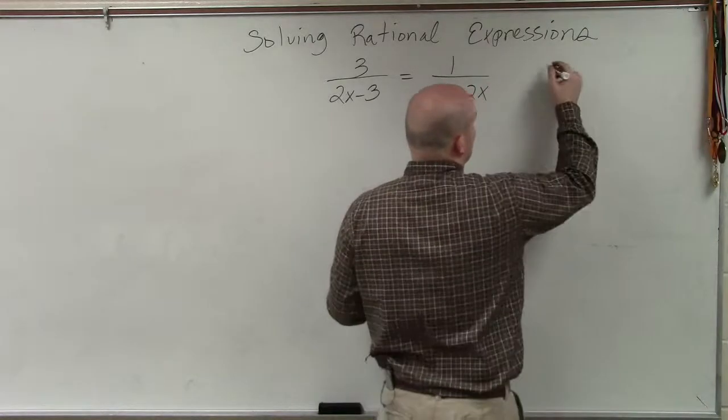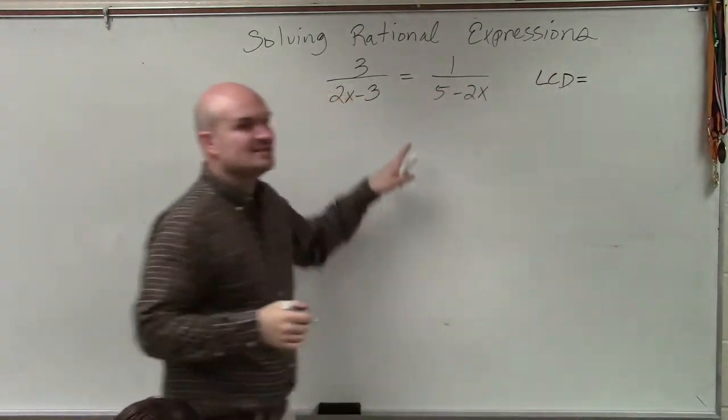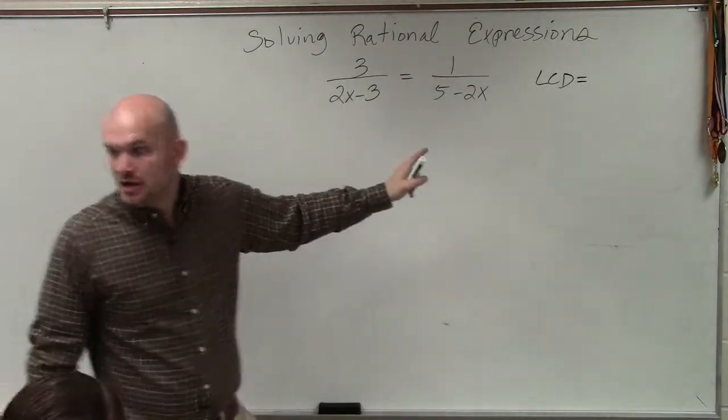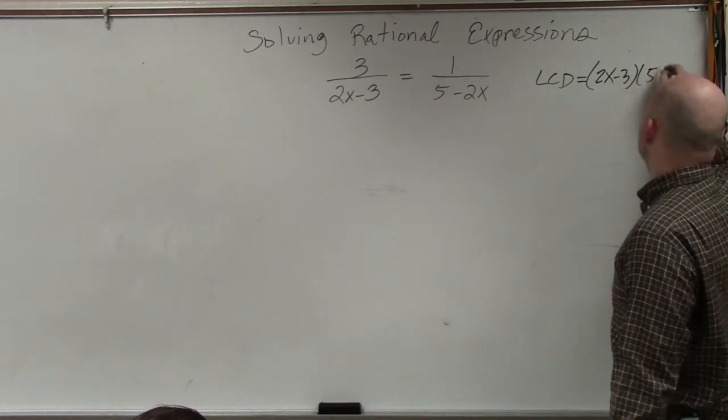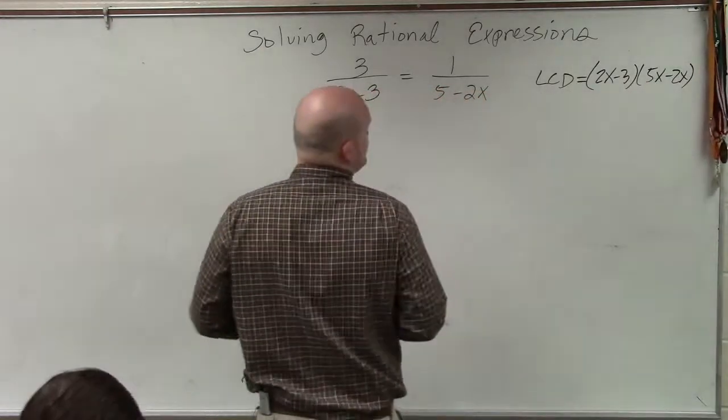So the first thing we do in both cases is we determine the LCD, which in this case, ladies and gentlemen, is just going to be the product. These do not divide into one another or have common elements, so therefore it's just going to be the product: 2x minus 3 times 5 minus 2x.